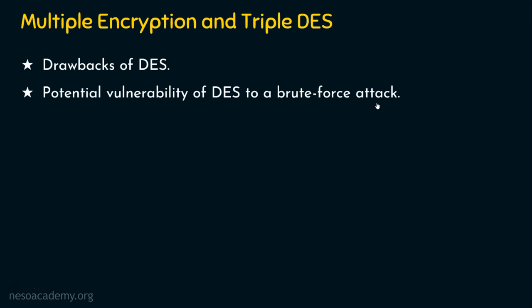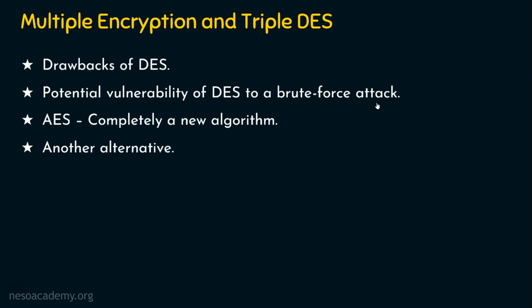Talking about a new encryption algorithm called AES, it is completely a new algorithm. It is not an enhancement in DES — AES is completely a new design, it's completely different. Is there any way to improve the security of DES? That is why we are thinking about another alternative to DES, which is not only AES. Why don't we make some improvements or enhancements on DES so that we can make DES a more powerful algorithm?